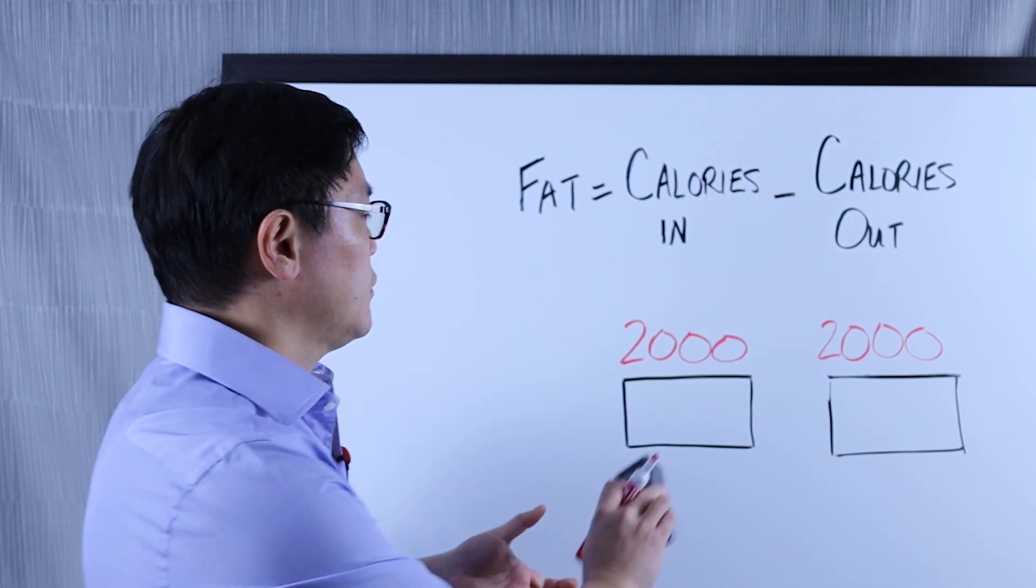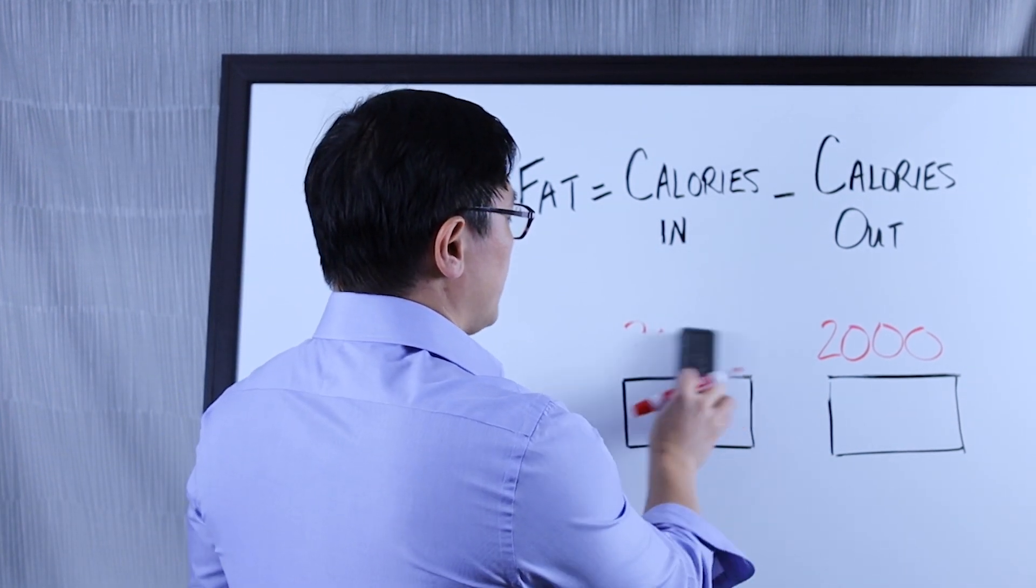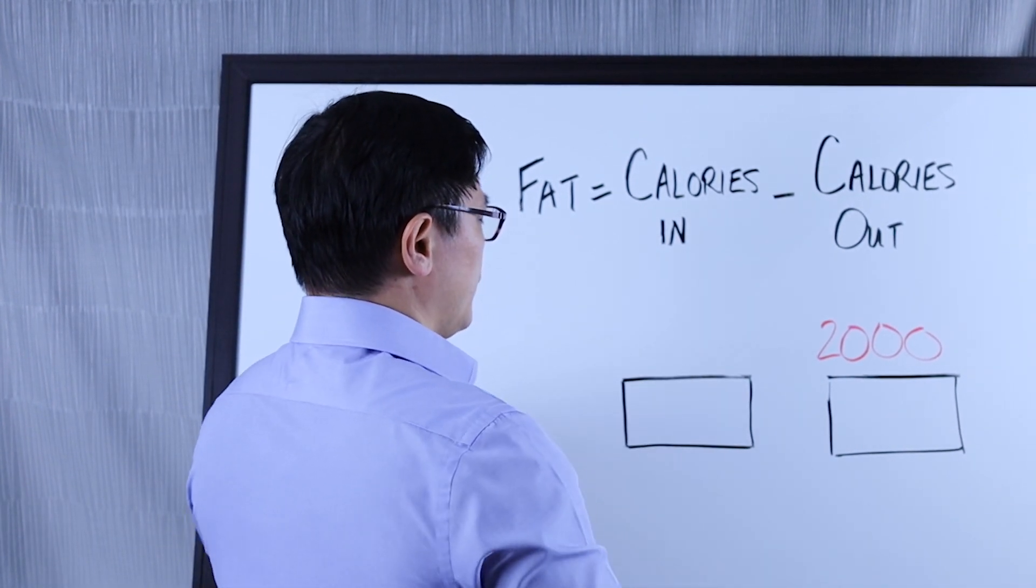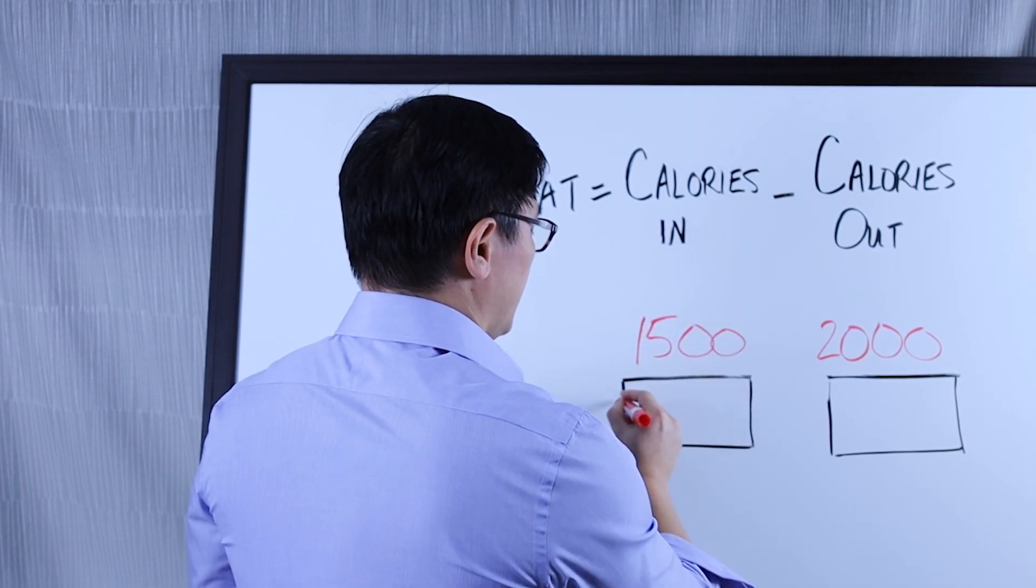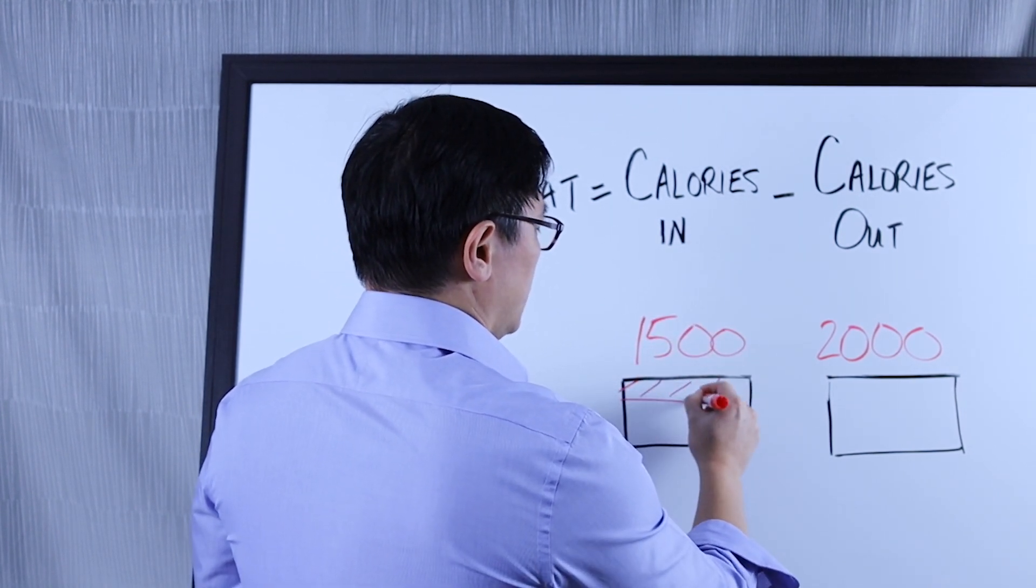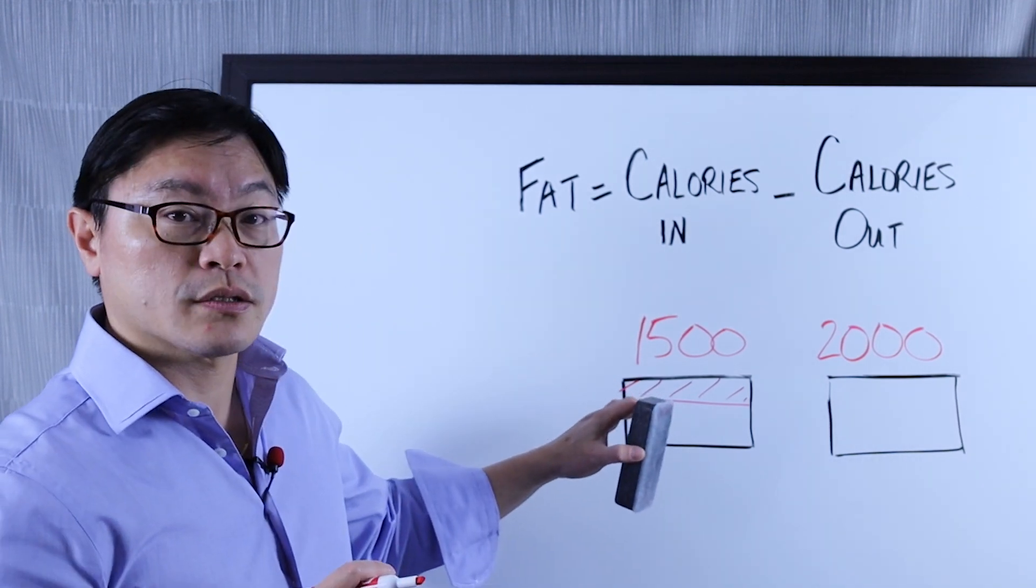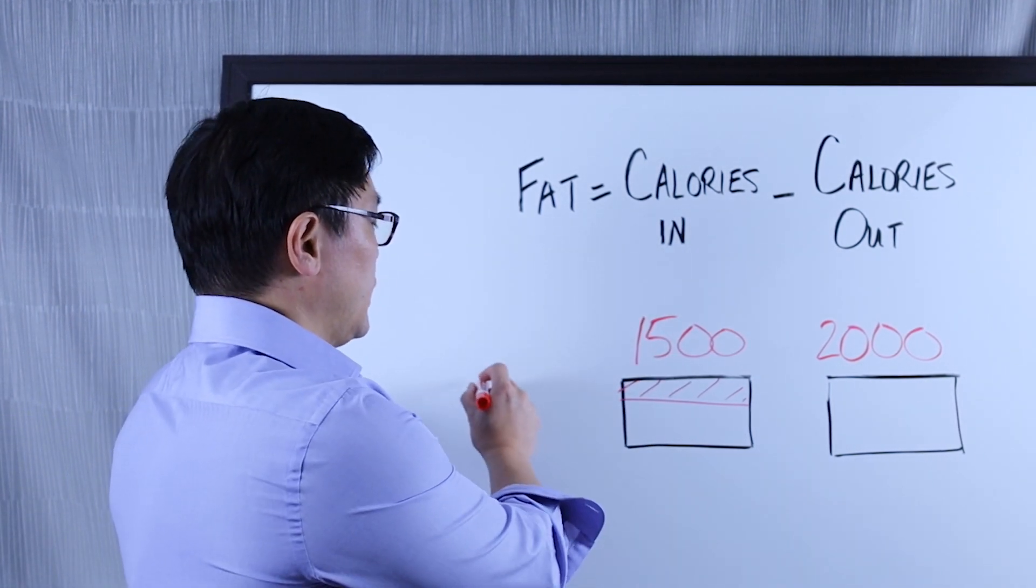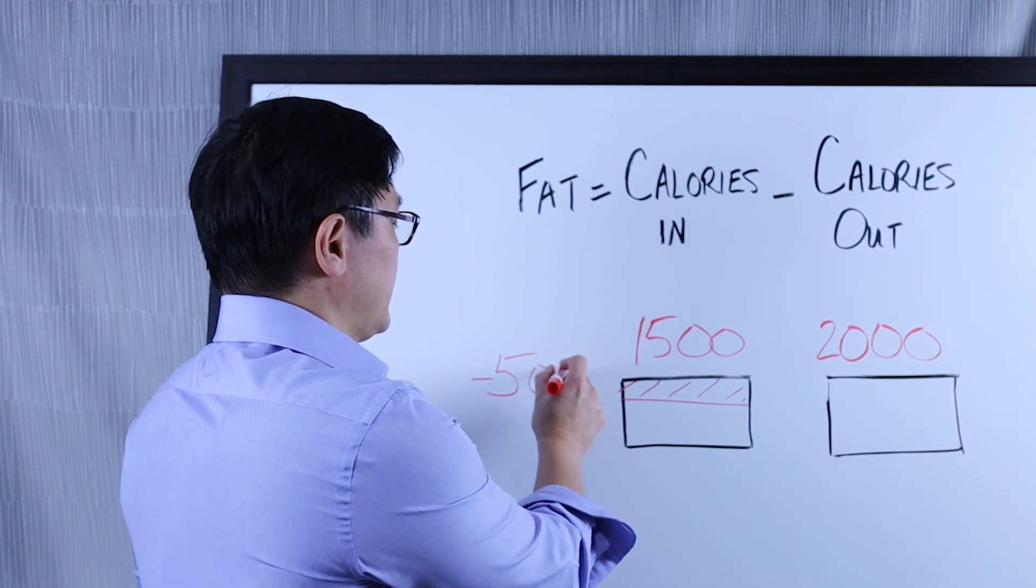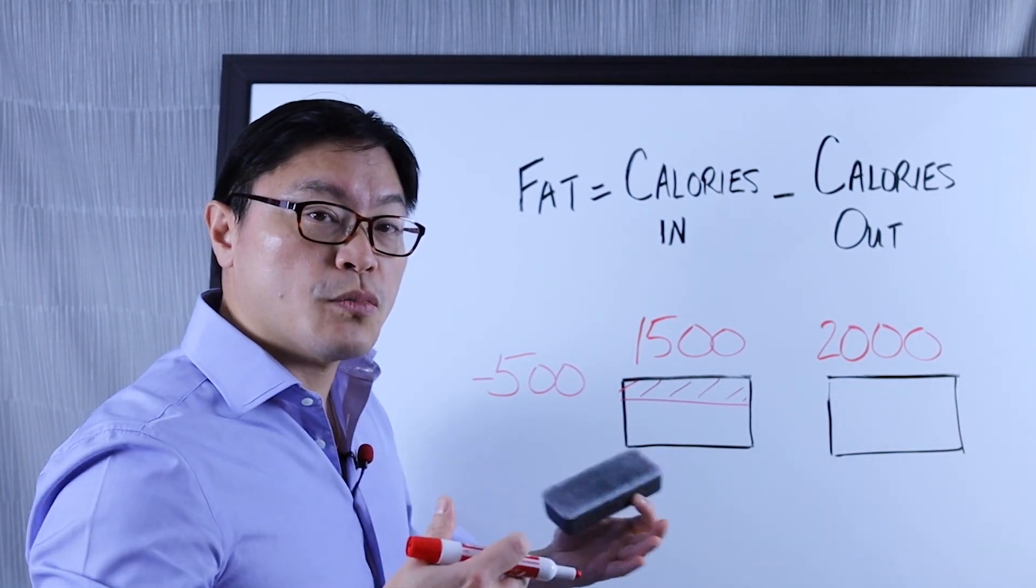Suppose we're eating 2,000 calories in a day and we're burning 2,000 calories in a day. Body fat remains stable. Now we want to lose weight, so instead of 2,000 calories, we're going to go down to 1,500 calories. What we hope is that now you've got negative 500 calories and you're going to lose body fat.